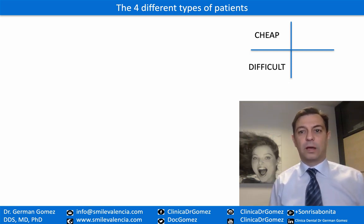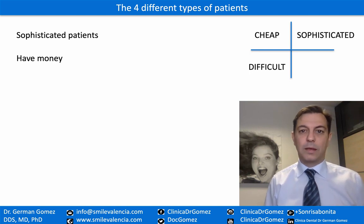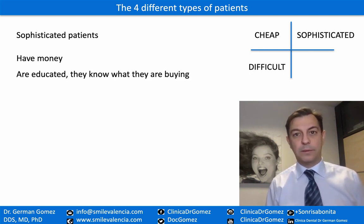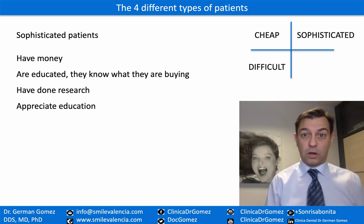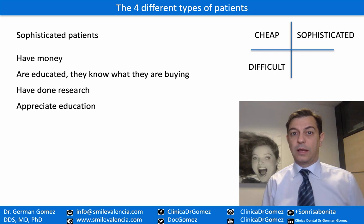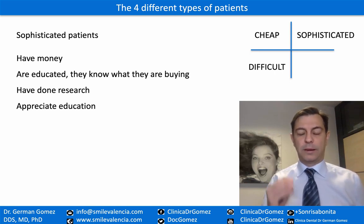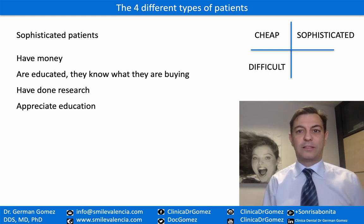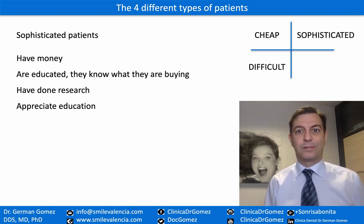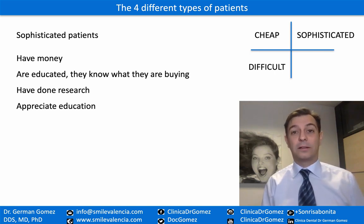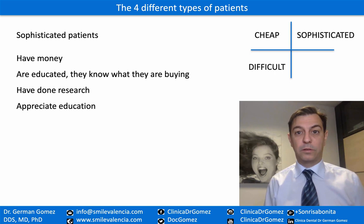The next type of patients I call sophisticated patients. These patients have money, they are educated, they know what they are buying, and they have done research. They appreciate education — they ask a lot of questions, but these questions are logical, and they appreciate you educating them. The difficult patient already knows everything in his mind. I like to ask difficult patients: 'In what university did you study dentistry?' And usually they say they didn't, and then I say, 'Well, I studied dentistry — let me explain to you how this is going.' But sophisticated patients, they genuinely appreciate that.